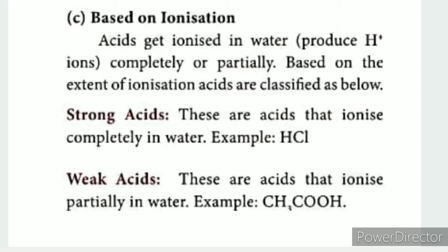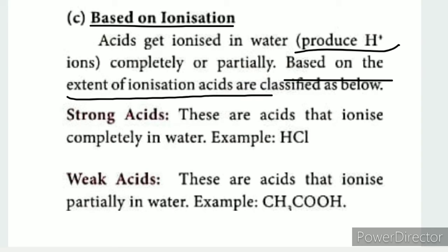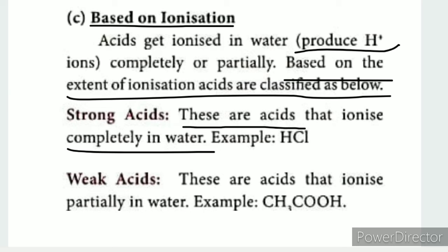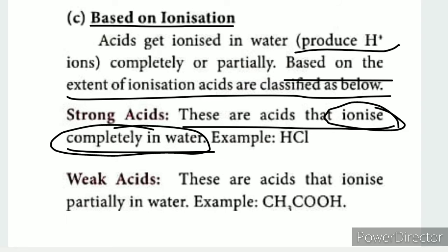The third classification is based on ionization. Acids get ionized in water, either completely or partially. Based on the extent of ionization, acids are classified as strong acids or weak acids. Strong acids ionize completely in water — for example, hydrochloric acid. Weak acids are only partially ionized.